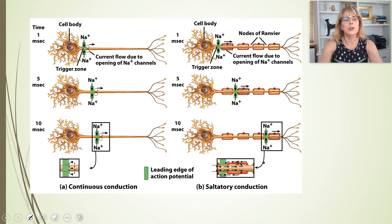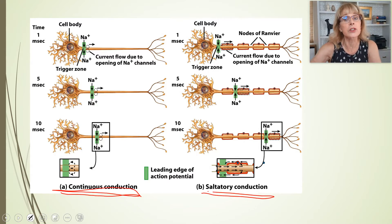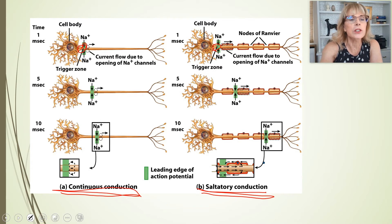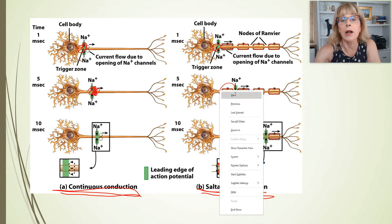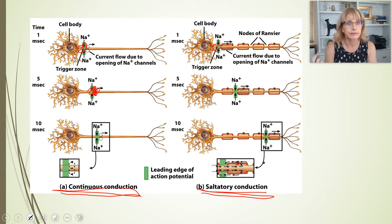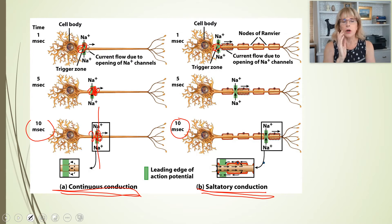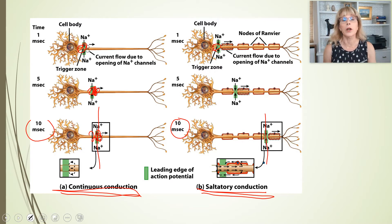Here we've got a race between regular conduction — called continuous conduction — and saltatory conduction. At the start of the race, at the end of the axon hillock, they're neck and neck. But at five milliseconds, continuous conduction is still propagating step by step, while saltatory conduction has already hopped to the next node of Ranvier. By 10 milliseconds, continuous conduction is only about a third of the way down, while saltatory conduction is two-thirds of the way down and only one hop from the end.